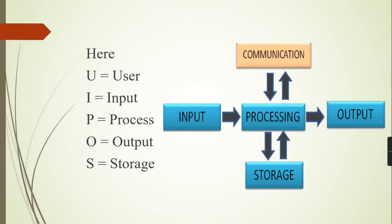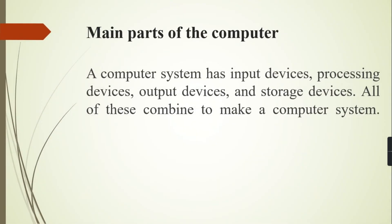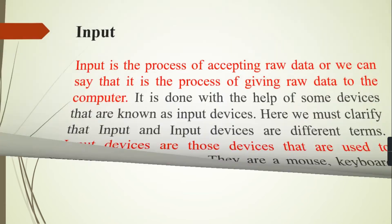Here U stands for user, I for input, P for process, O for output, and S for storage. Now we discuss the main parts of the computer. A computer system has input devices, processing devices, output devices, and storage devices. All of these combine to make a computer system.